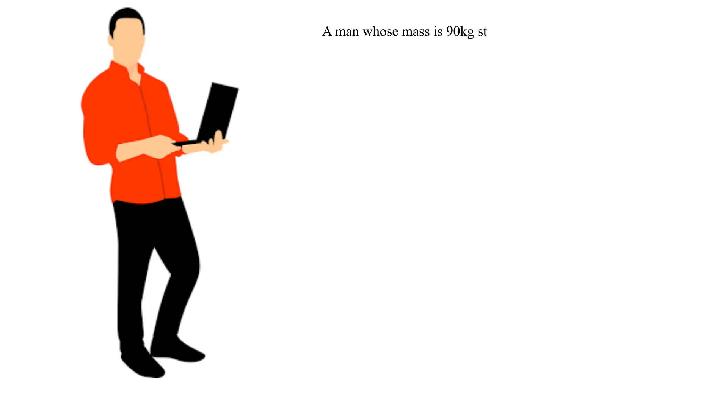A man whose mass is 90 kg stands on a floor. Part A: If the area of contact between his feet and the floor is 0.0368 m², determine how much pressure he is able to exert on the floor.